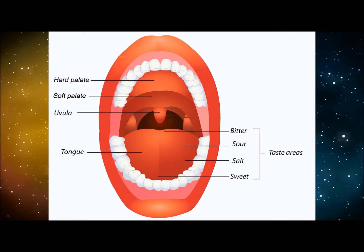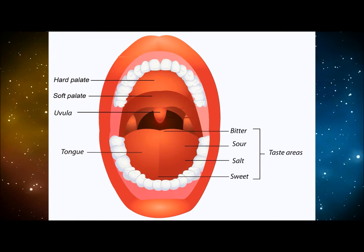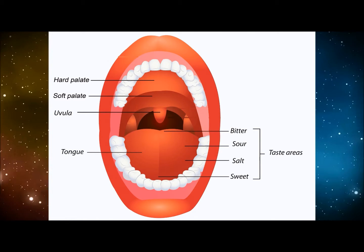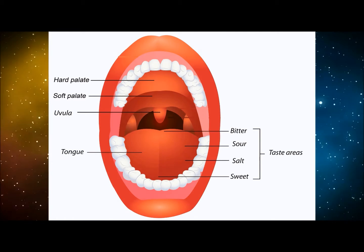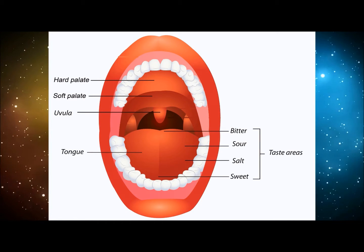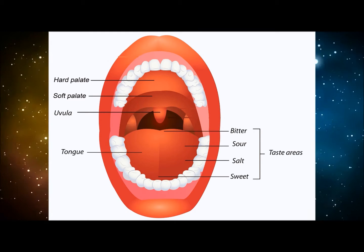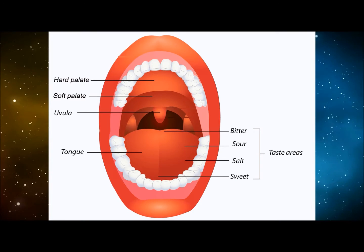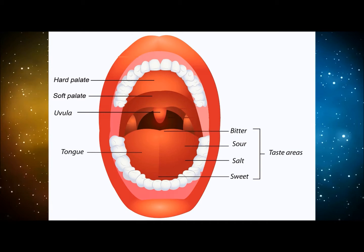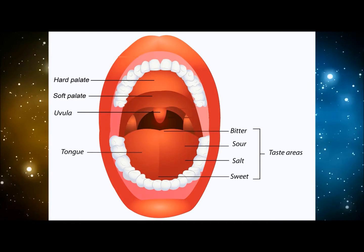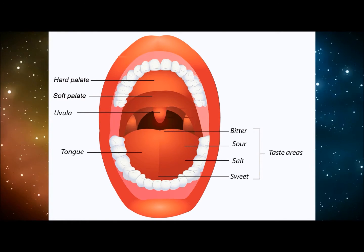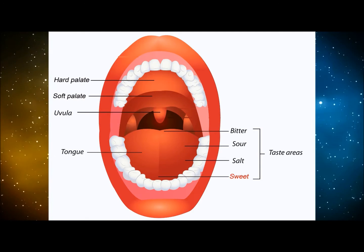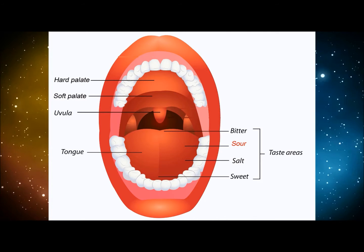Now let's talk about the star of the show: the tongue. The tongue is the muscle man here, moving the food along, mixing it with saliva, and then ushering it to the back to be swallowed. The tongue is also covered by mucous membrane and is located on the floor of the mouth within the curve of the jaw, also known as the mandible. Apart from moving food along, the tongue tells us how good the cooking was thanks to its taste buds, which can distinguish sweet, salt, sour, and bitter.